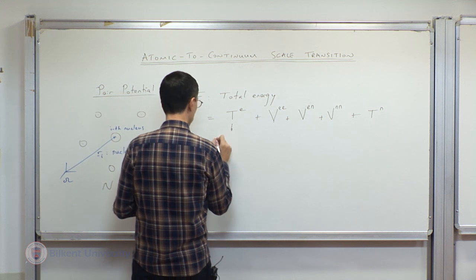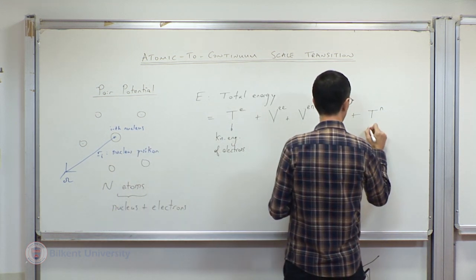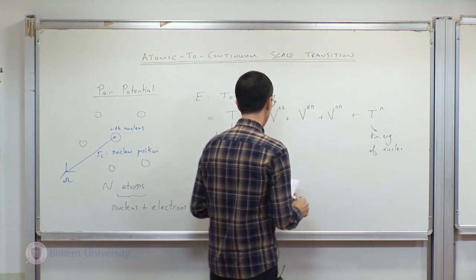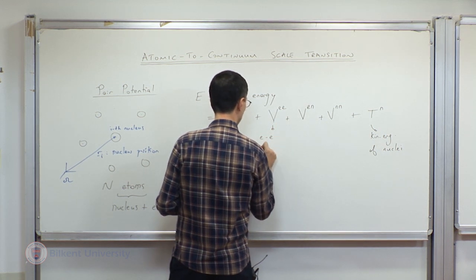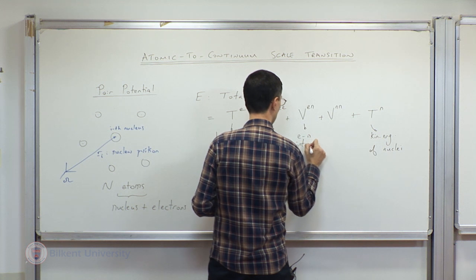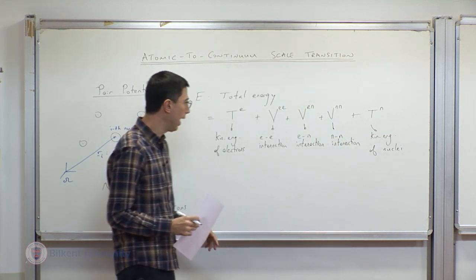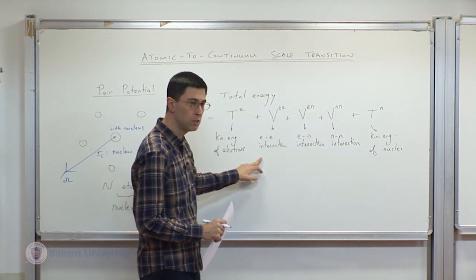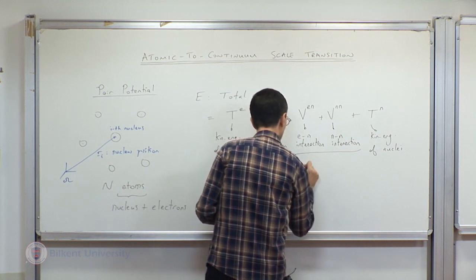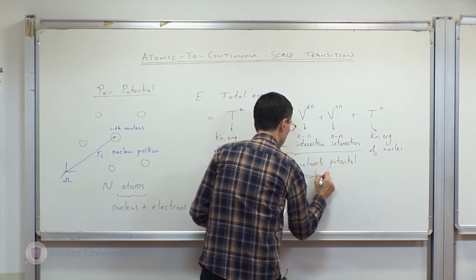Let me make a note. This is the kinetic energy of electrons, the kinetic energy of nuclei, the electron-electron interaction, the electron-nucleus interaction, and finally the nucleus-nucleus interaction. These three interactions are inherently described by the Coulomb potential, which states that if you have two charges Q1 and Q2, the potential is proportional to the product of the charges divided by the distance R12 between the two charges.